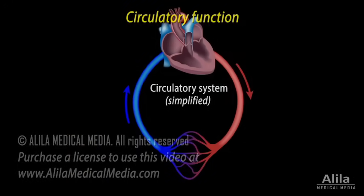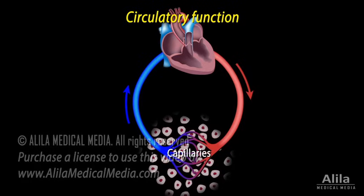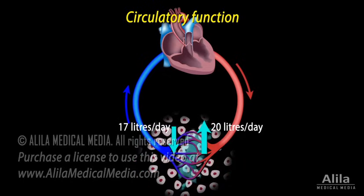The major purpose of the circulatory system is to bring oxygen and nutrients to body tissues and remove wastes. This exchange happens in the smallest blood vessels called the capillaries. Blood plasma containing nutrients moves out of capillaries at the arterial end of capillary beds, while tissue fluid containing wastes reabsorbs back in at the venous end.